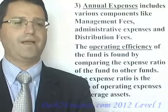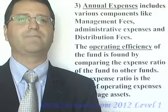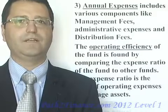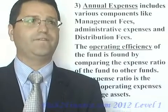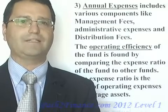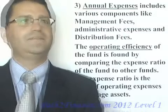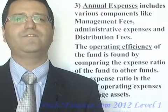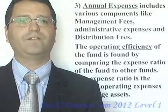Another way an investment management company makes money is by charging an annual expense. This expense is meant to cover the management fees, distribution fees, and the fees needed to cover administrative expenses. The operating efficiency of a fund is determined by looking at the amount of these fees divided by the assets of the fund — that will tell you what the fund's expense ratio actually is. Typically, the annual fees for a mutual fund would be around 1.5 percent. These fees are charged to shareholders on an annual basis and generally form the largest component of a fund's fee structure.